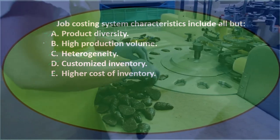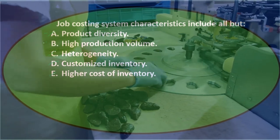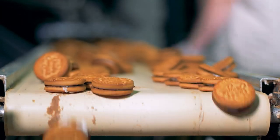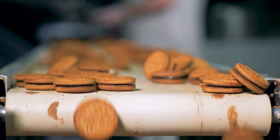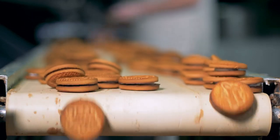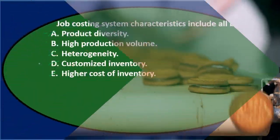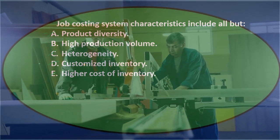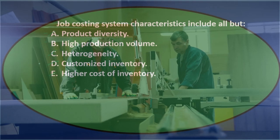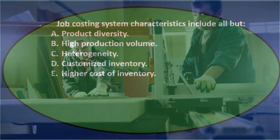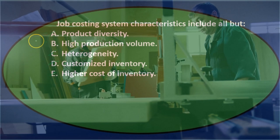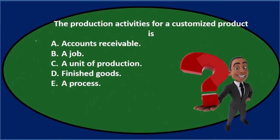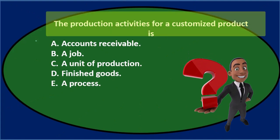That leaves us with B, high production volume — and that makes sense. Comparing to a process cost system, a job cost system will have lower production volume because of all the diversity in production. All products are different in nature, so we can't make as many of them — we customize them, make fewer, and hopefully charge more. Final answer: job costing system characteristics include all but B) high production volume.